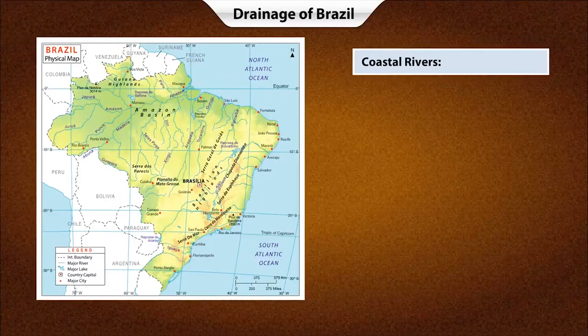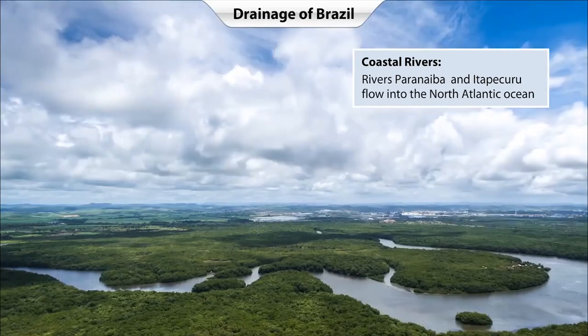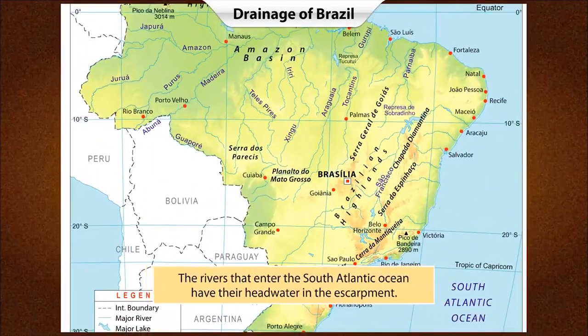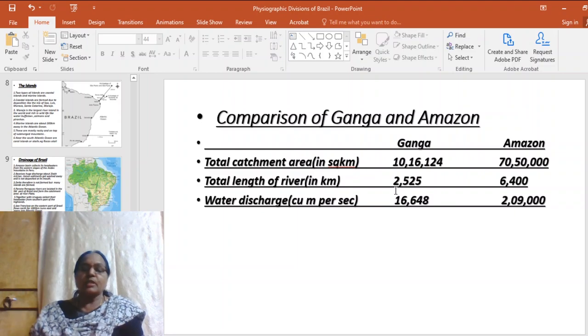Brazil has several short coastal rivers. The coastal areas are the most densely populated regions. Paranaiba is an important source for the Parana river. Itapecuru River lies in northern Brazil. Both rivers flow into the North Atlantic Ocean. Rivers entering the South Atlantic Ocean have their headwaters in the escarpment. The river Paraguacu enters the Atlantic Ocean near the town of Salvador.